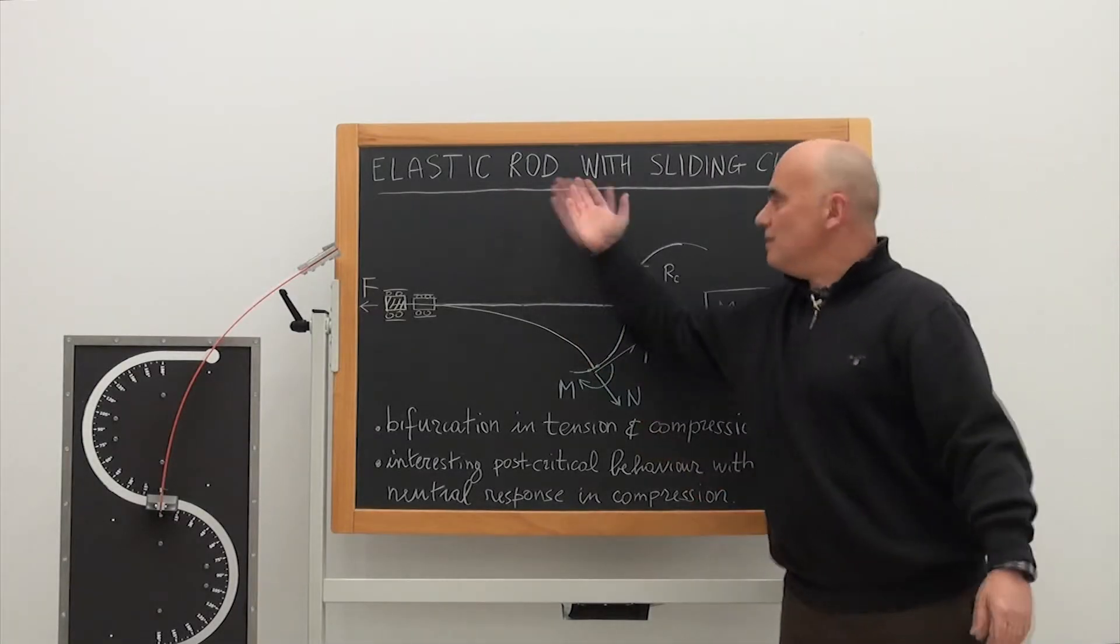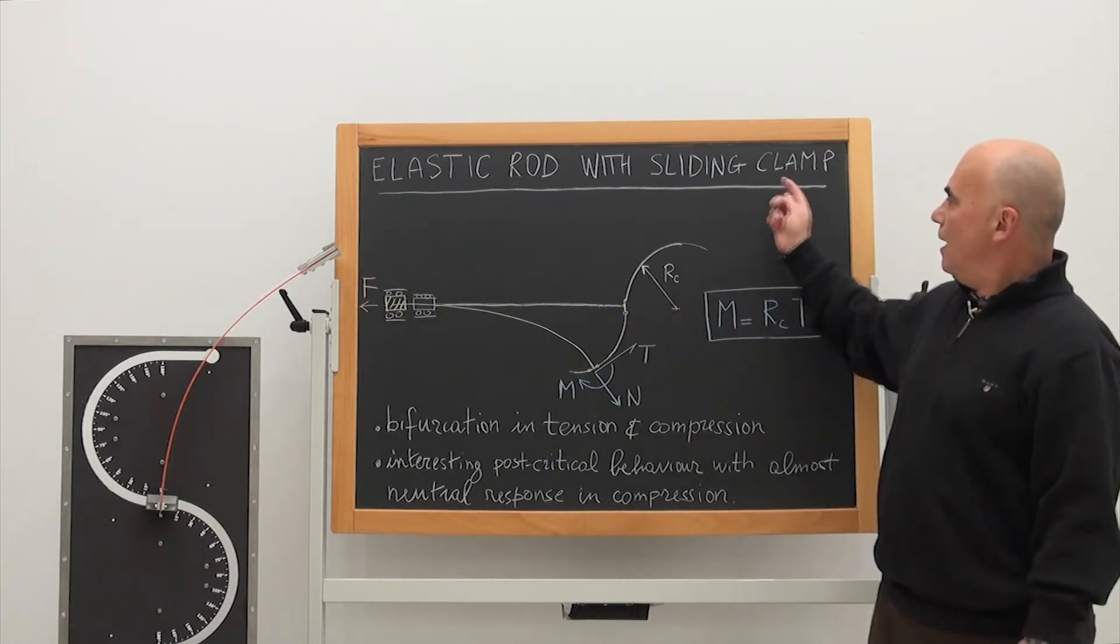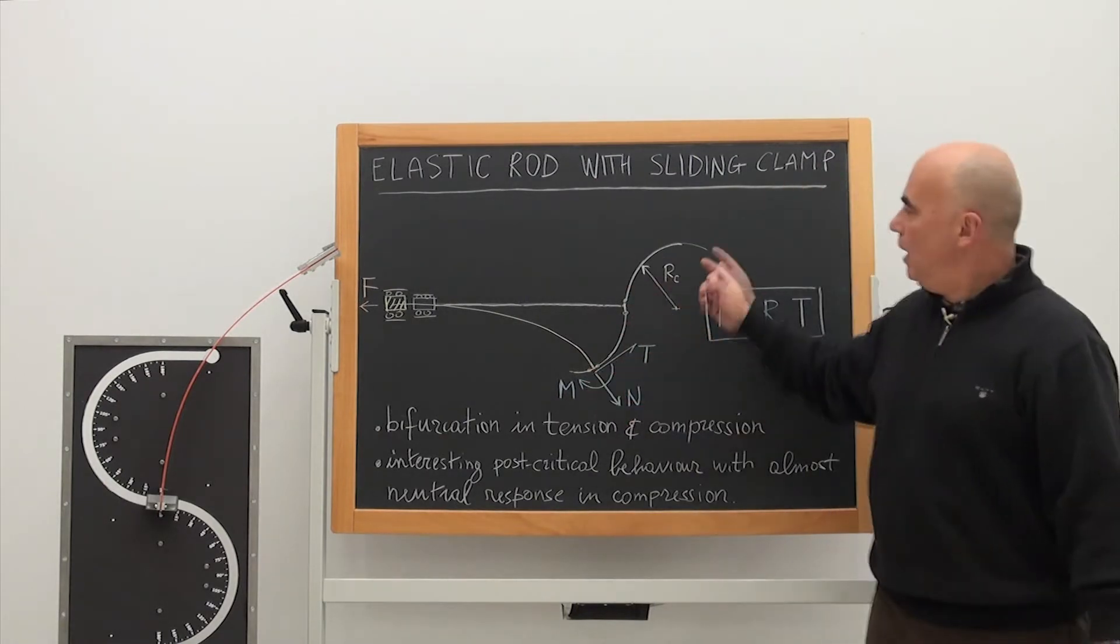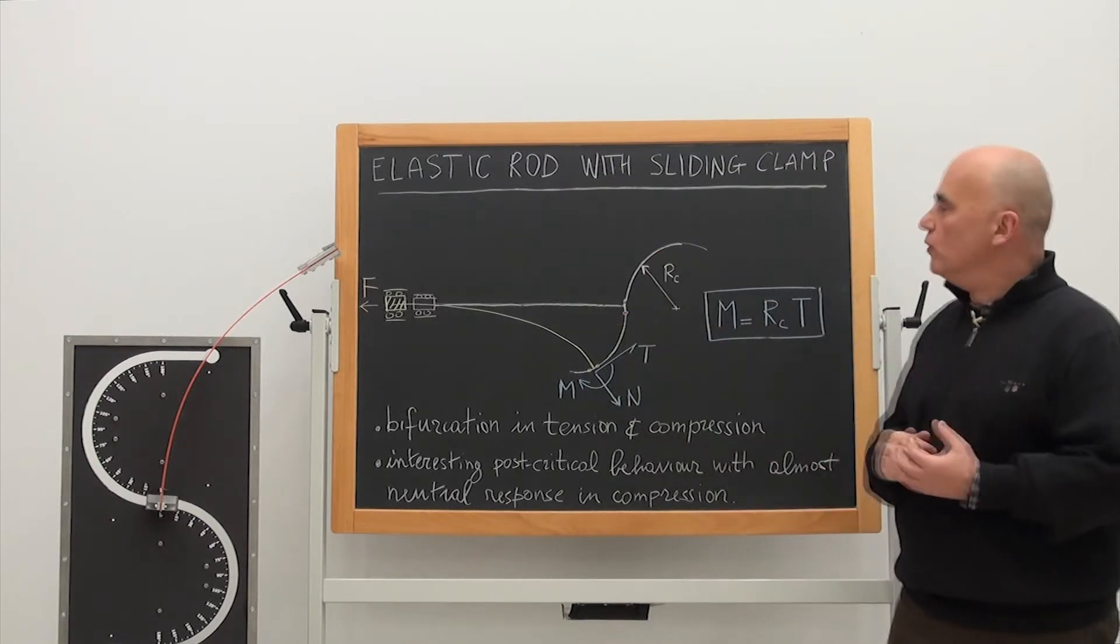We analyze an elastic rod with, on its right end, a clamp which may slide along a curved, bicircular, perfectly smooth constraint.